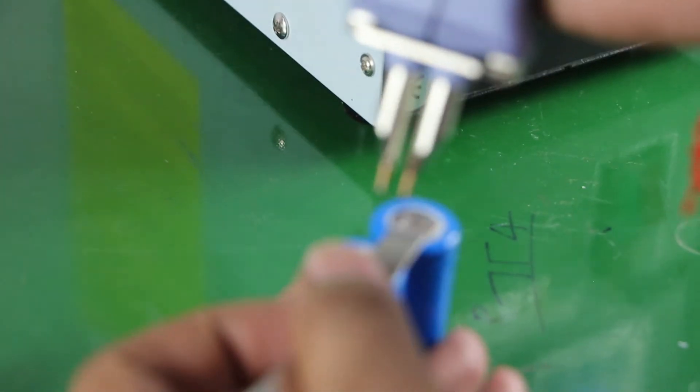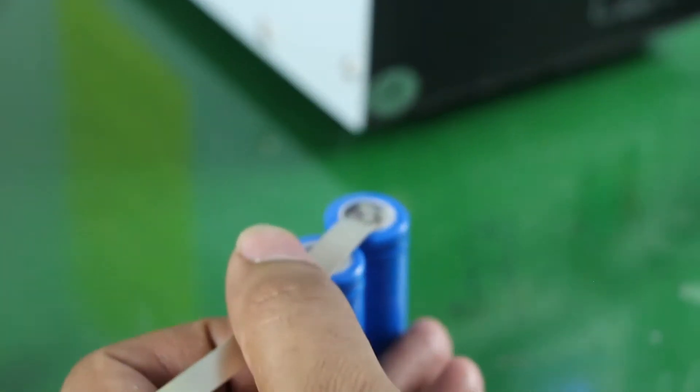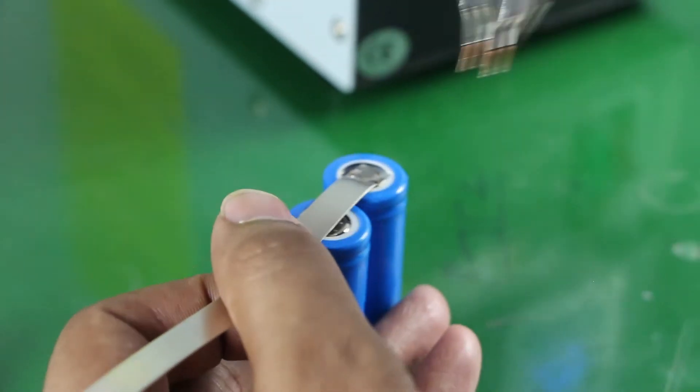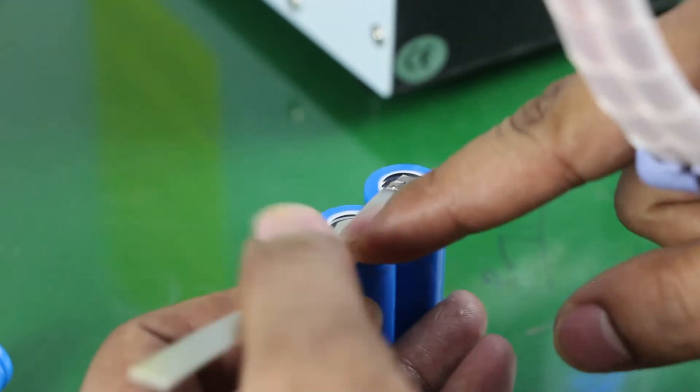We just need to connect these two wires to this terminal and set the power supply and pulse as per our nickel requirement. Just need to put this here. Just need to trigger this pedal.